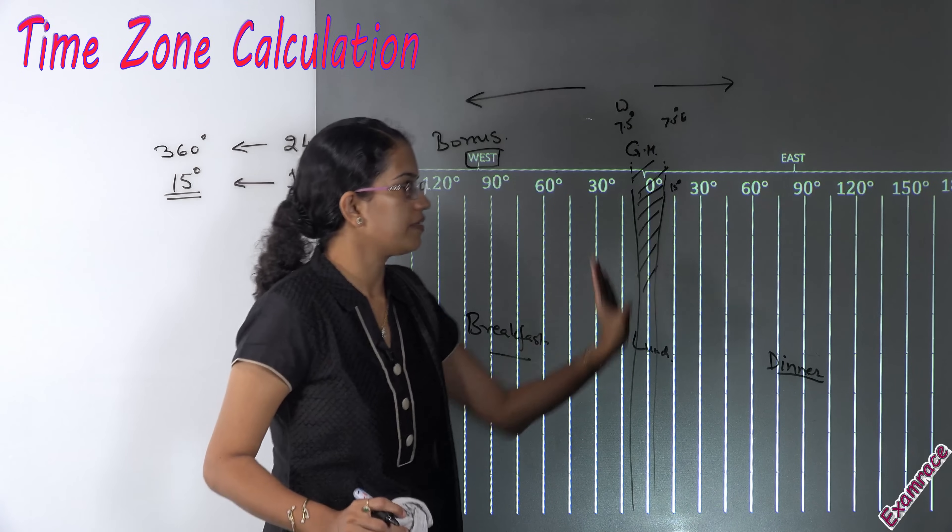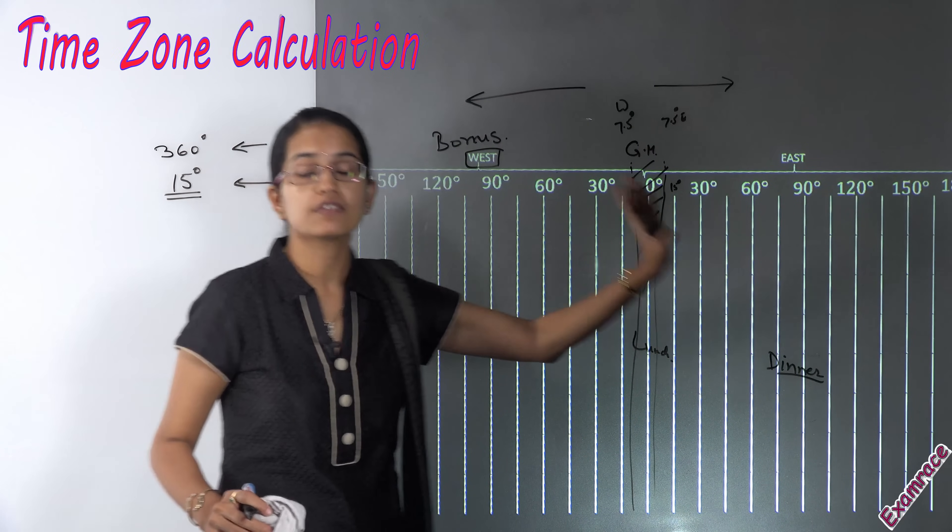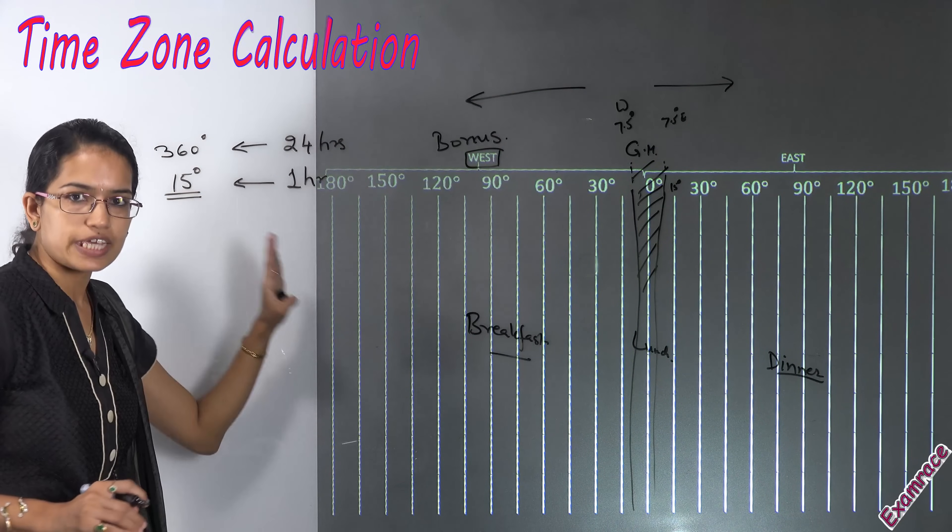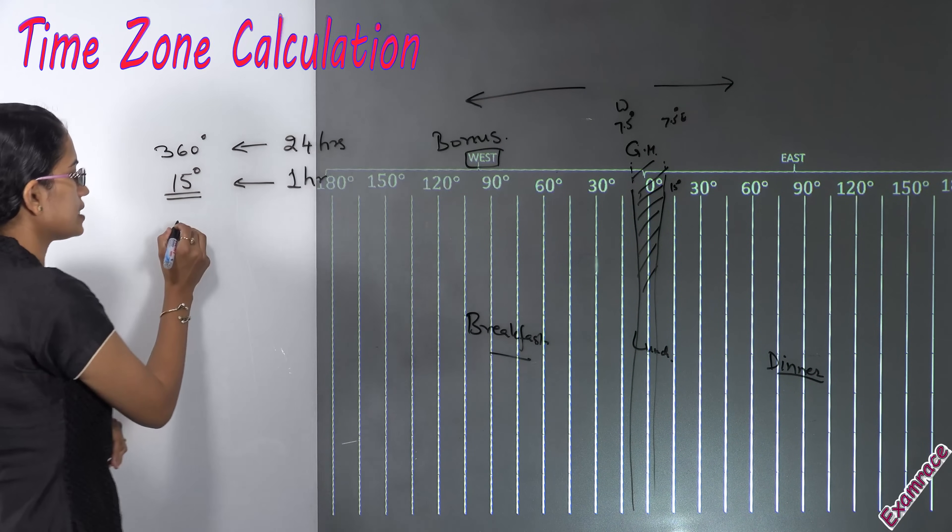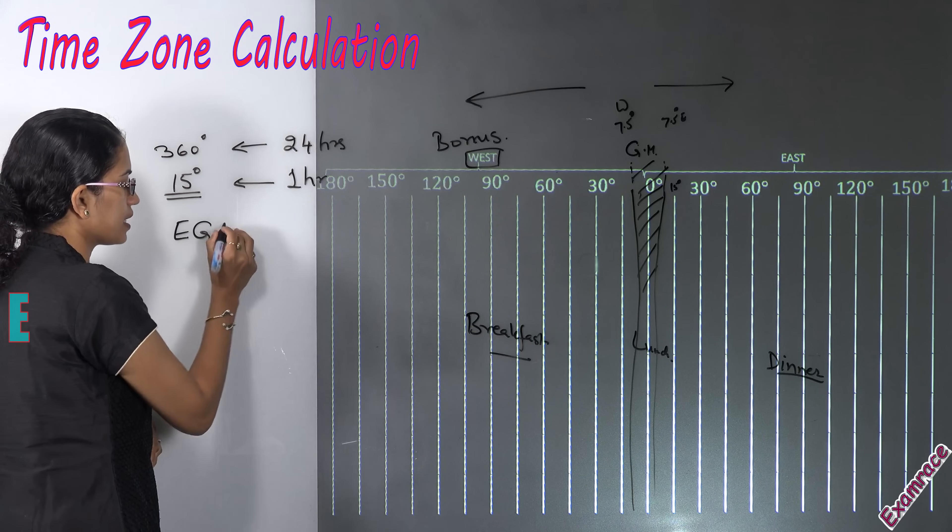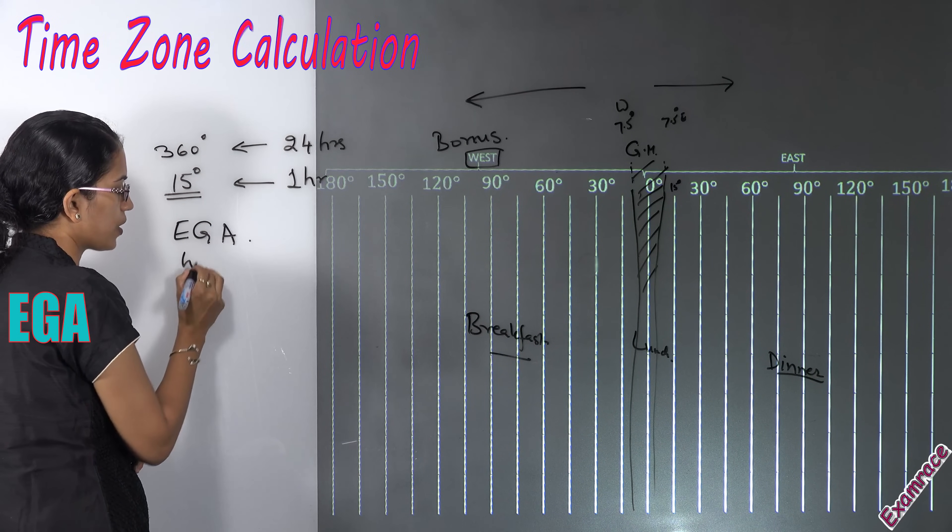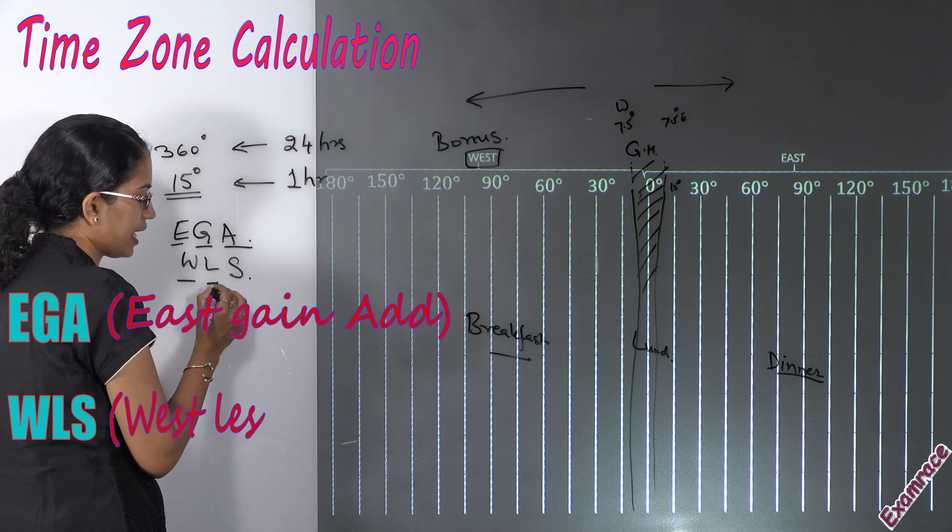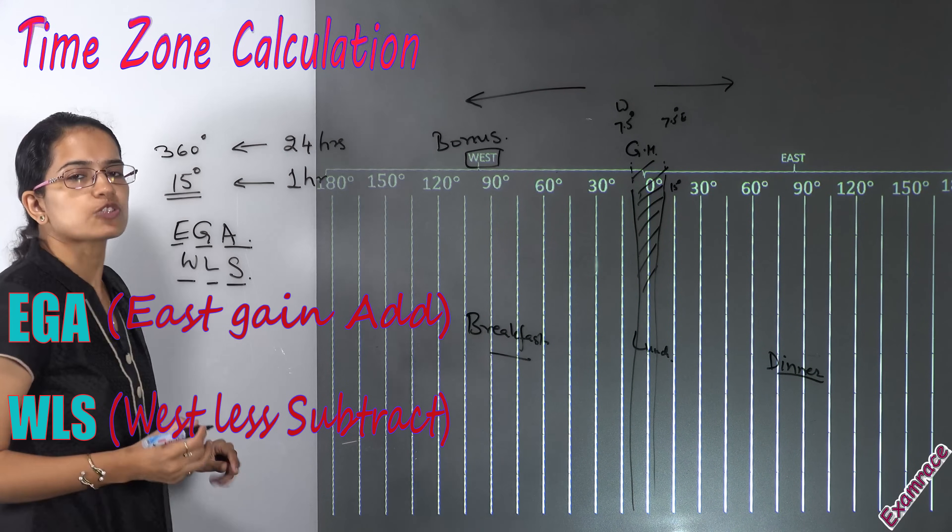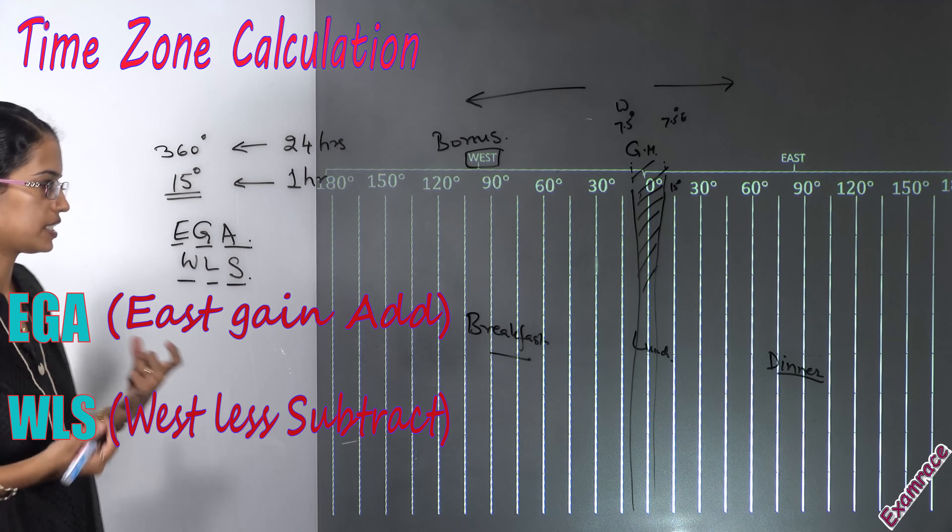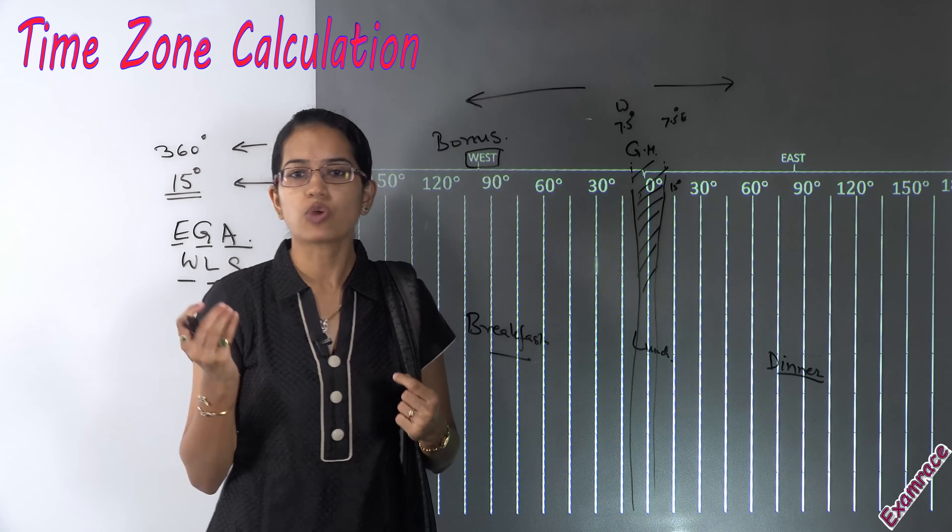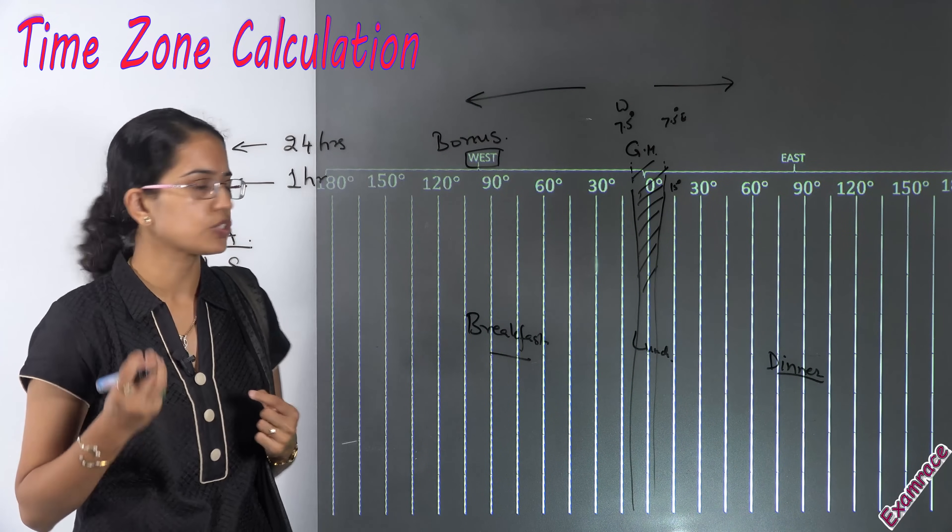Whenever we move towards east we gain the time. However when we move towards west we lose the time. There is another important way to remember it that is EGA or WLS: East Gain and Add, West Less and Subtract. That's the basic abbreviation I tell all the students to remember. Now let's solve some quick numericals based on this.